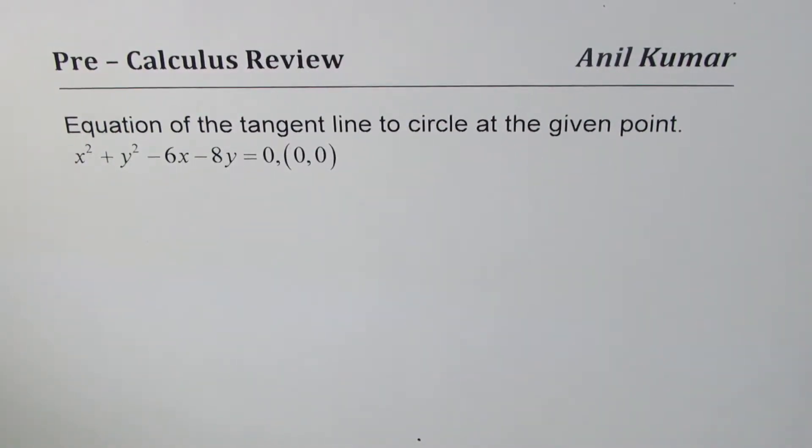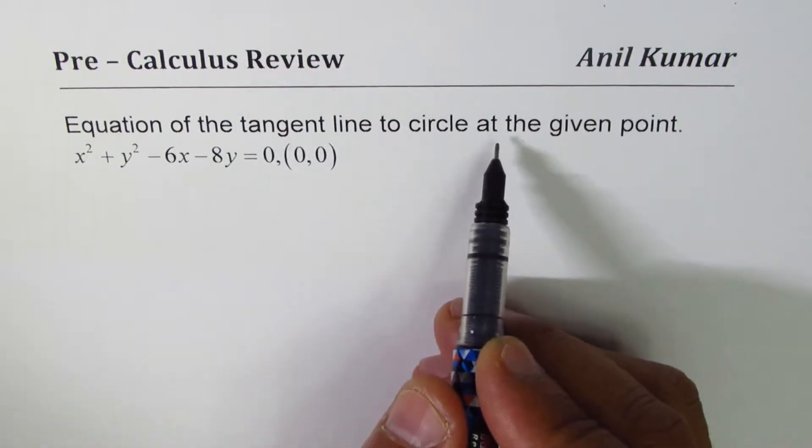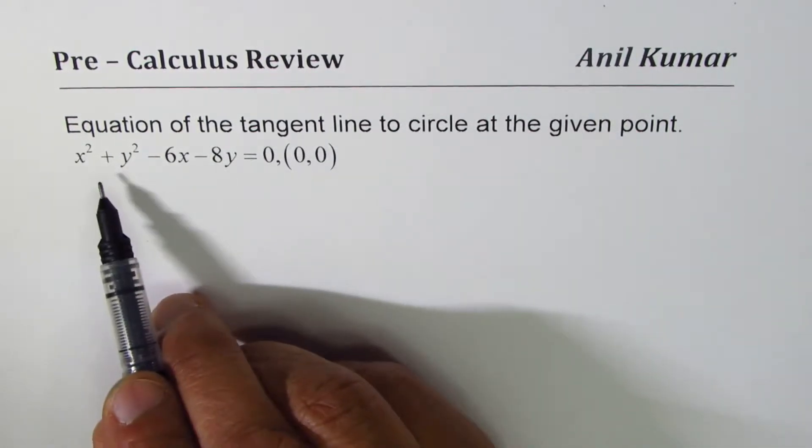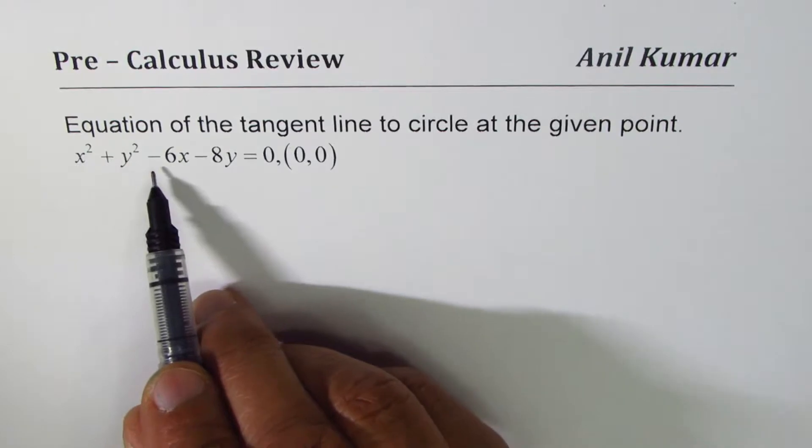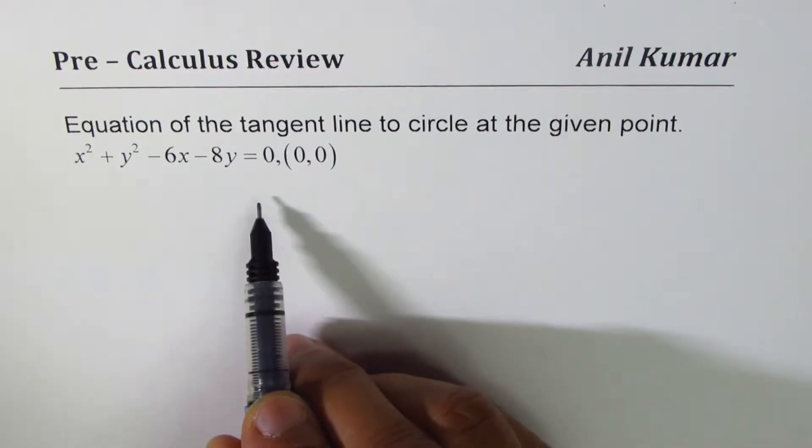I'm Anil Kumar and in this video we will review the concept of finding equation of tangent line to a circle at a given point. The question is: equation of tangent line to circle at a given point. The equation given to us is x² + y² - 6x - 8y = 0 and the point given to us is (0,0).